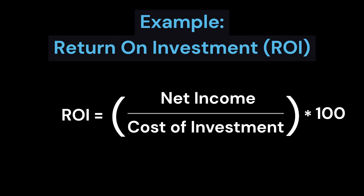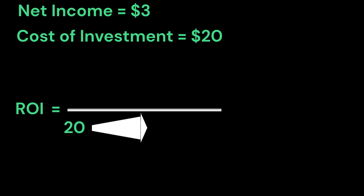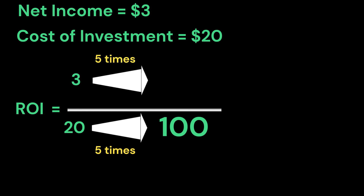Let's take a look at the example of return on investment, ROI. By definition, ROI equals net income divided by cost of investment, multiplied by 100. Assume that net income is $3 and cost of investment is $20. To find out the percentage, increase the denominator — that is 20 — all the way to 100. For that, we had to make the denominator five times the original value. Correspondingly increase the numerator, which is 3, by five times as well.